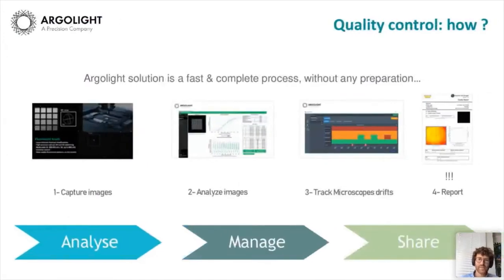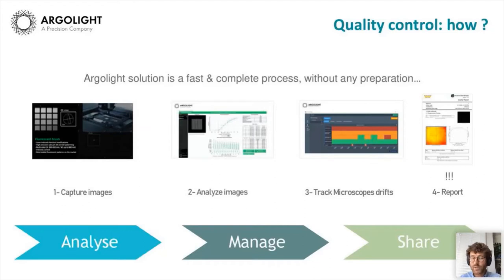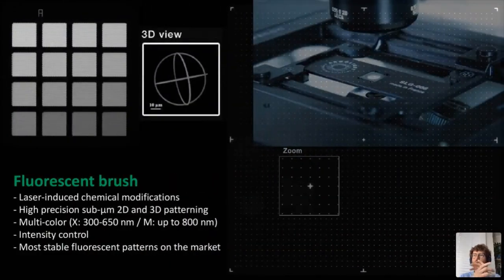This is what ArgoLight is trying to change. The goal of ArgoLight is to make not just the hardware but the complete workflow of quality control much faster and all in one tool — going from analyzing performances to managing them over time, and being able to share results with members of the microscopy facility, users, or even microscope vendors if you need help. The point is really to streamline the workflow of quality control.